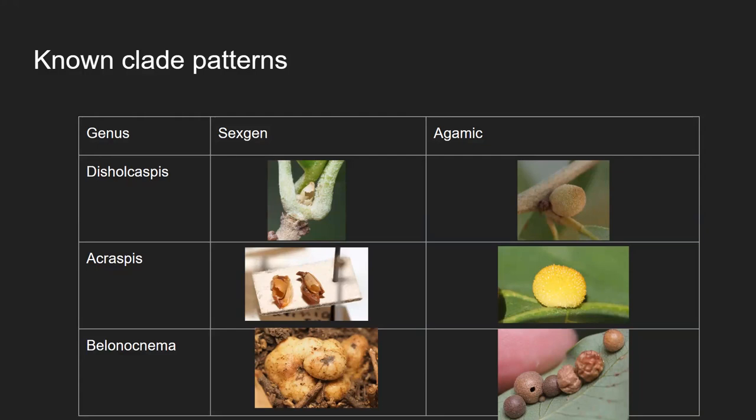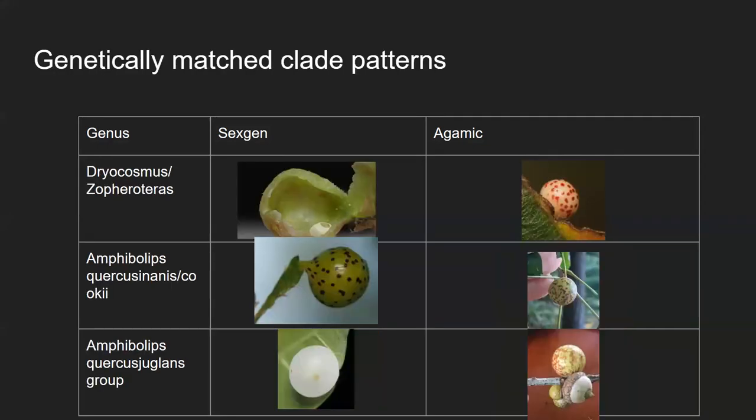The agamic wasps emerge in the fall, lay eggs on the buds just as they're about to overwinter, and then the galls gradually develop inside the bud. Some development happens during the fall, some during the spring. There's presumably a reason it needs to be there in the fall rather than waiting until spring. These are patterns where we have no ecological evidence connecting the two, but genetic evidence has told us these two groups likely form two halves of the same species life cycle.